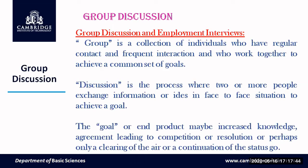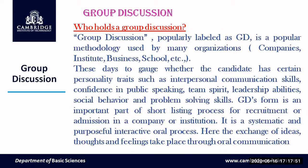So what is a group discussion? Group is a collection of individuals who have regular contact and interact often. Discussion is a process where two or more people exchange information or ideas to achieve a particular goal. Group discussion, popularly labeled as GD, is a popular methodology used by many organizations.